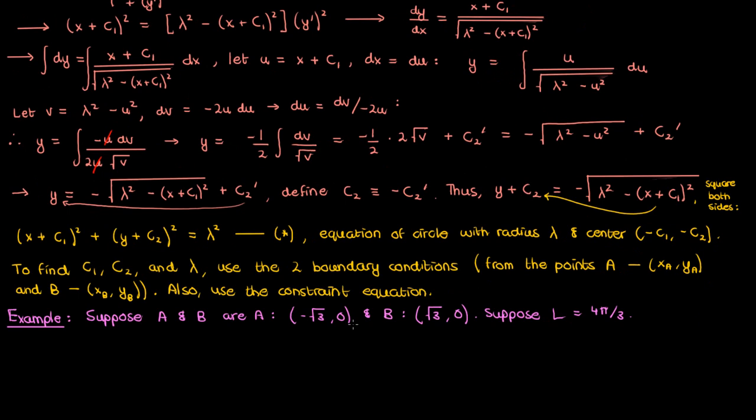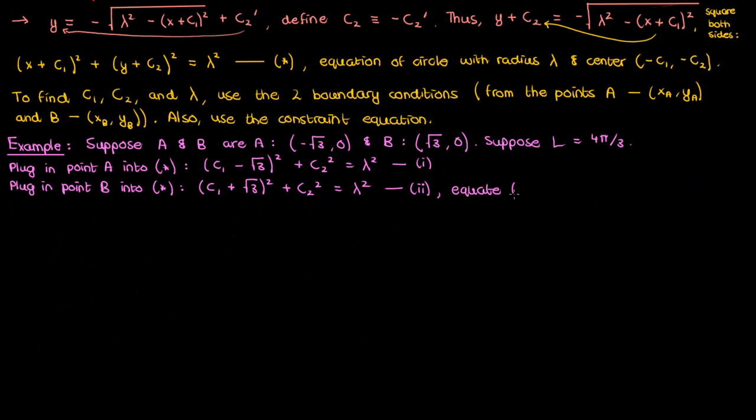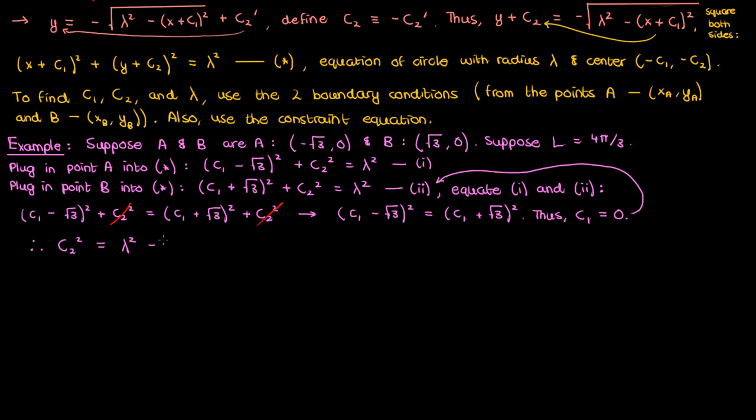Let's start by substituting these points into the equation of the circle that we have up here starting with point a. I'll call this equation 1. We then plug in point b into equation star to get the following and I'll call this equation 2. Since lambda squared and lambda squared are equal we can equate the left-hand sides of 1 and 2 to get the following. Now the c2 squares are going to cancel and we're left with this equation just in terms of c1. The only possible solution to this equation is c1 equals 0 so we've solved for one of our constants effectively. If we then plug in this c1 equals 0 into say equation 2 we'll get the following equation in terms of the remaining two unknown constants c2 and lambda and I'll call this equation 3.